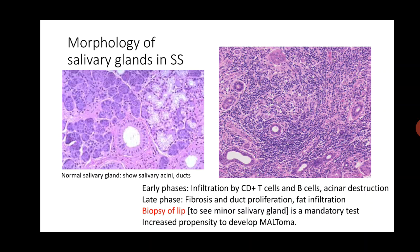Some of these patients, due to extensive inflammatory infiltrate by lymphoid cells, can later develop lymphomas. These are malignant tumors of lymphoid cells, and typically these patients develop a lymphoma known as a MALToma. MALT stands for mucosa associated lymphoid tissue, and MALToma refers to a lymphoma arising from MALT tissue.